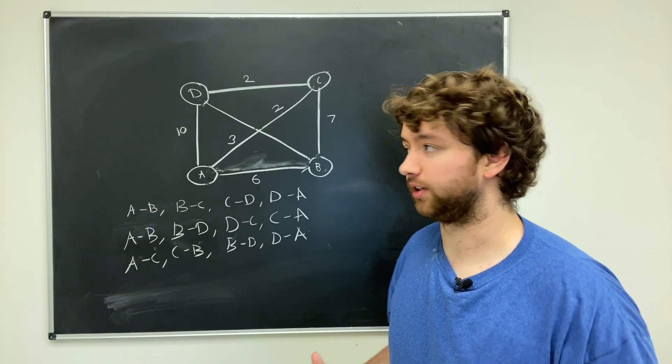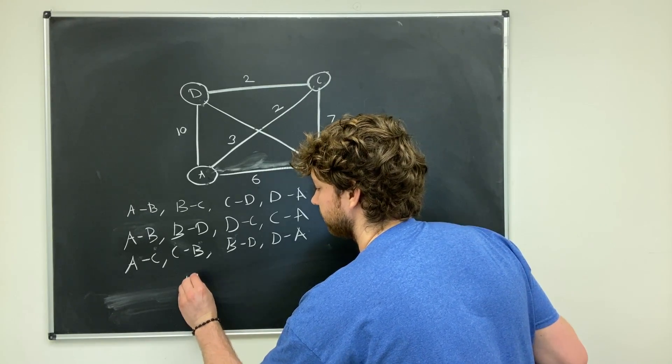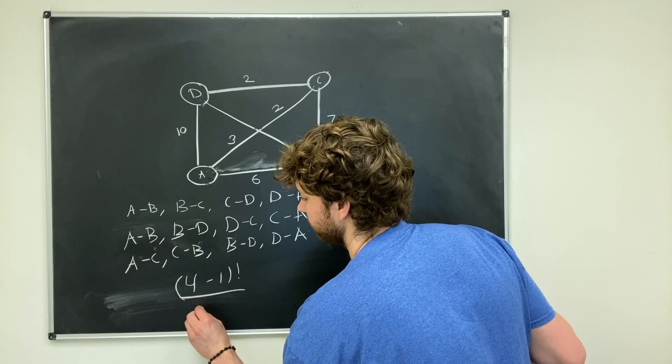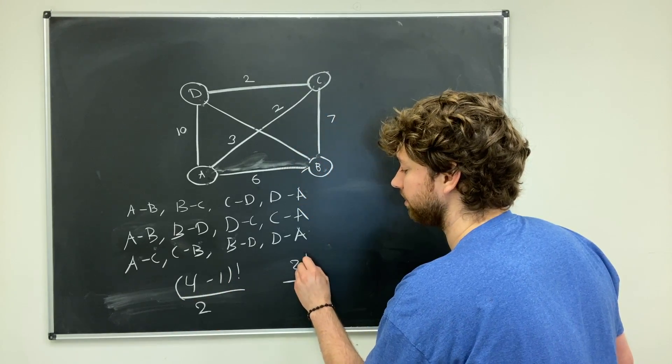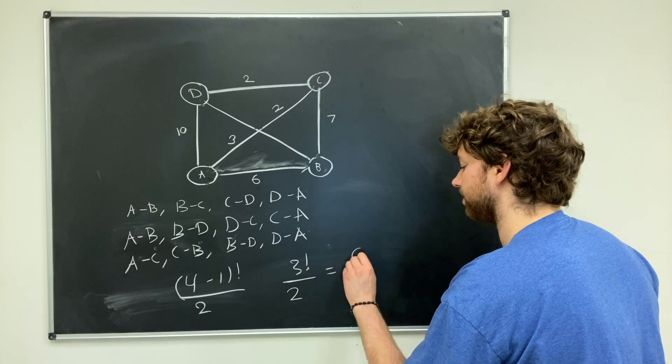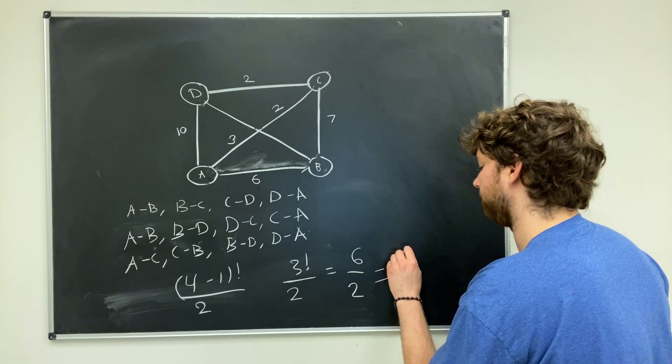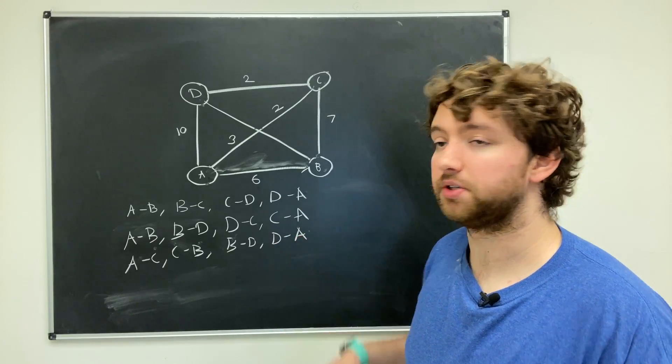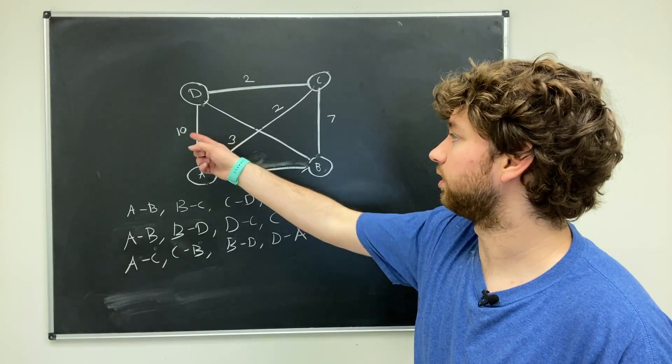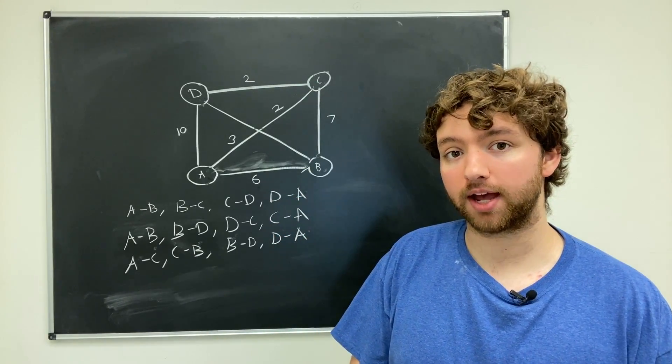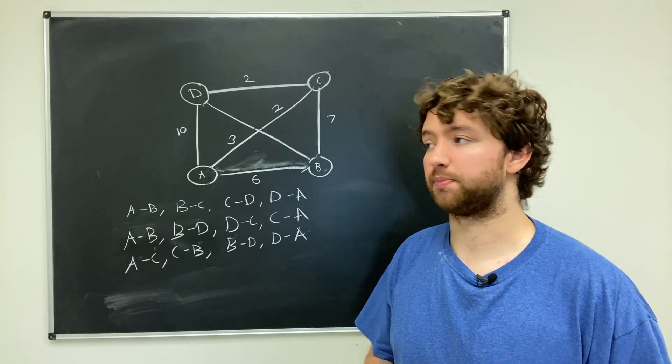And this does add up with our calculation earlier, because we basically had 4 minus 1 factorial, all divided by 2. Evaluating the top, we would have 3 factorial divided by 2. This is 6 divided by 2, which is 3. But we're not quite done. We figured out the permutations, but we haven't taken a look at the actual time to travel to the cities to figure out which path is best.